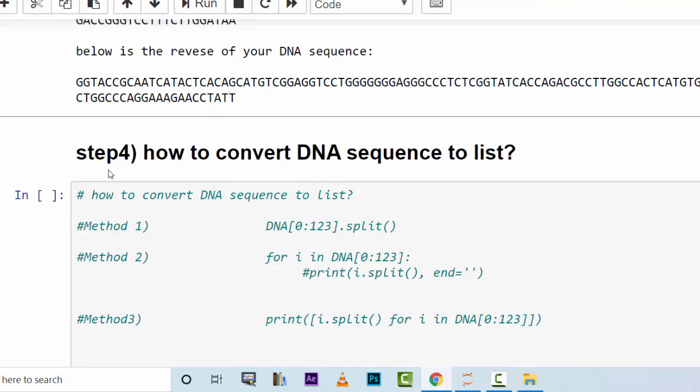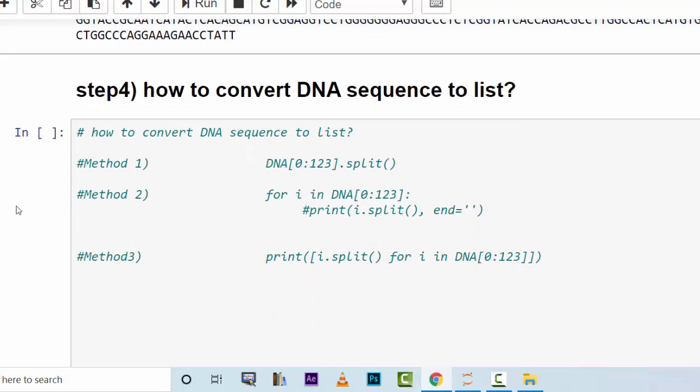Step 4 is how to convert DNA sequence to a list. This is also quite important. There are several methods of doing so. I wrote three methods for you. You can use any one of those methods to convert your DNA sequence to a list. In the next coming tutorial I'm going to use this to make my function quite useful. Here I'm going to use the third method, in order to convert my DNA sequence from a string into a list.